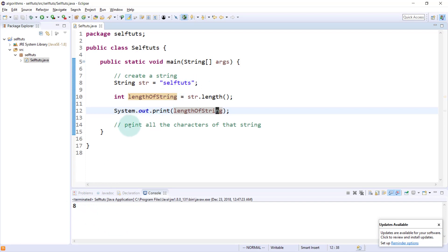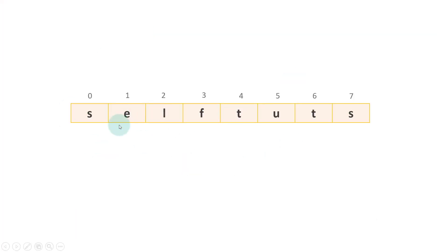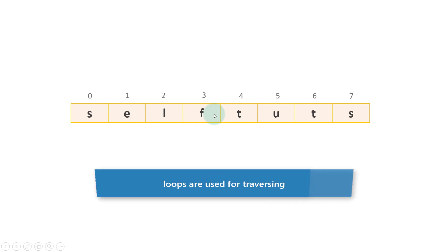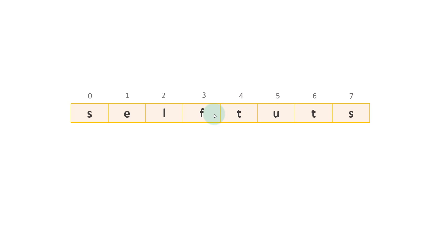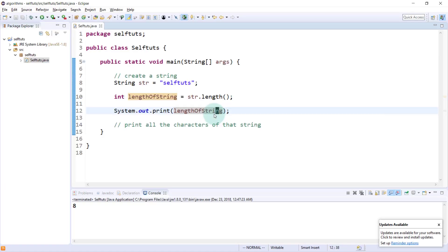Now we need to print all the characters of the string, which means we need to traverse the string and print one character at a time — first, second, third, fourth, and so on. Whenever there is a concept of traversing, you need to use a loop. You can use a while loop or a for loop. Here, we will be using the for loop to print the characters.